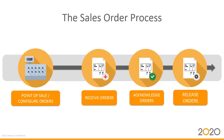First, let's outline what we mean by the order entry process. Different organizations have different workflows they use to manage orders, but if you boil the process down, almost every organization follows the same basic steps. At your point of sale, someone configures the order, you receive the order, you acknowledge that the order is good, and then when you're ready, you release the order to production. You likely have some processing steps in between each major step.